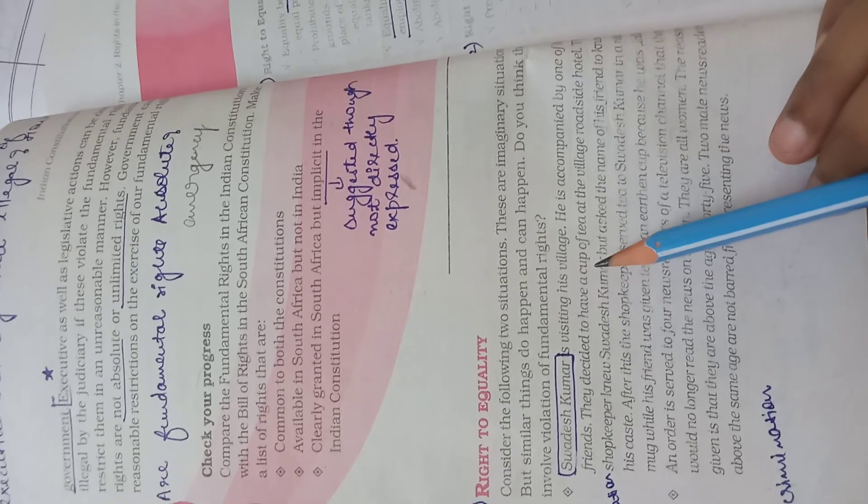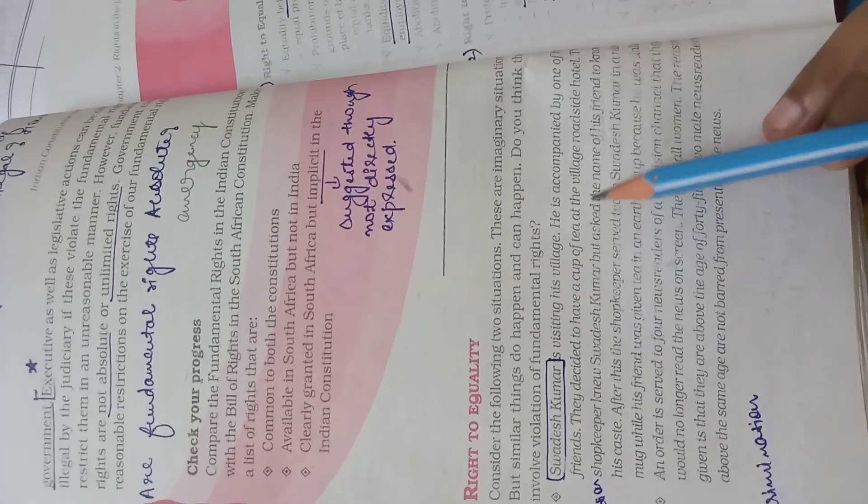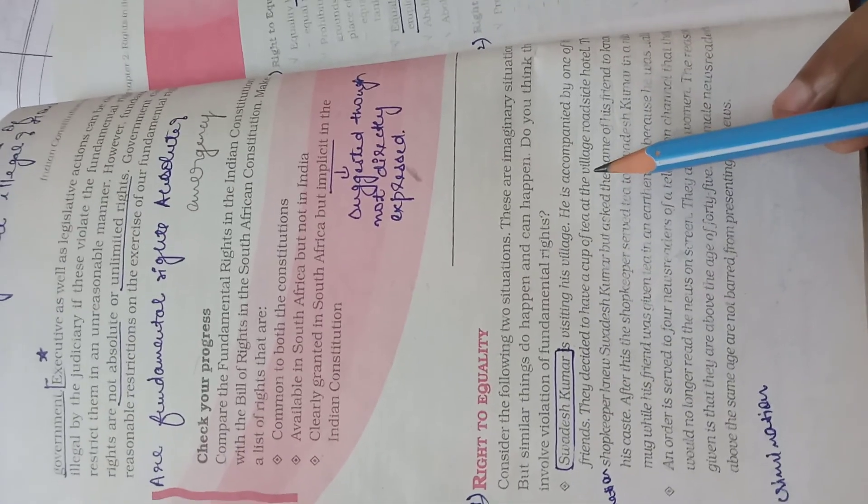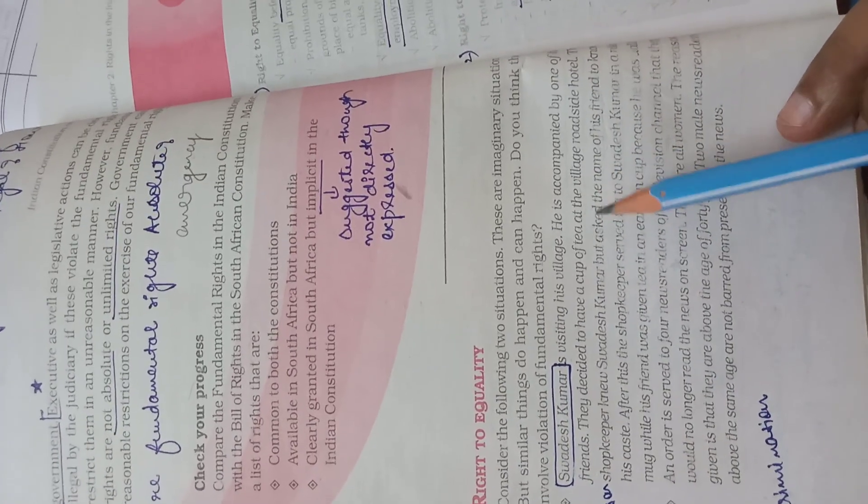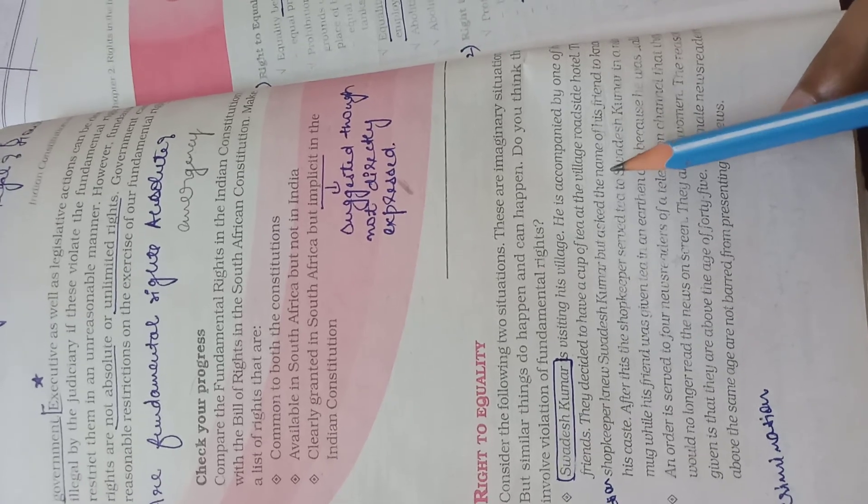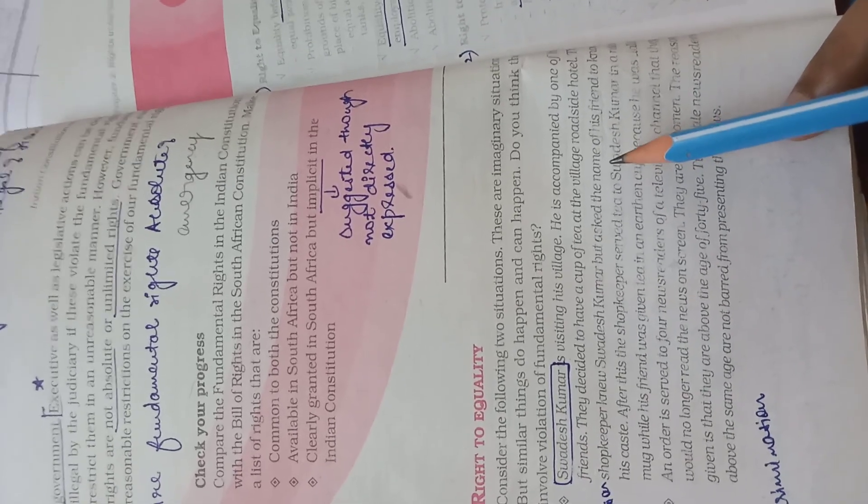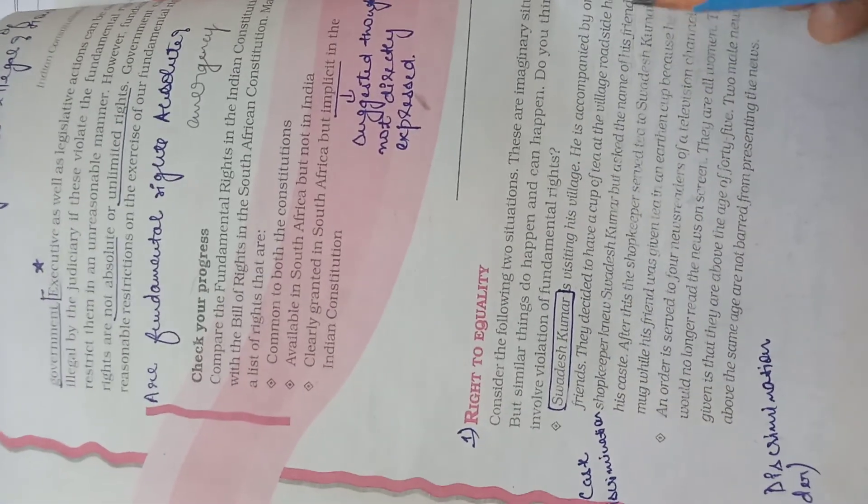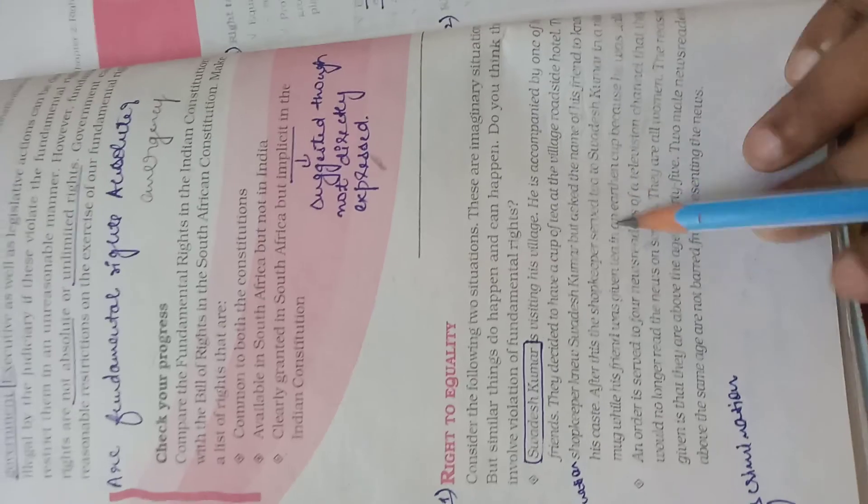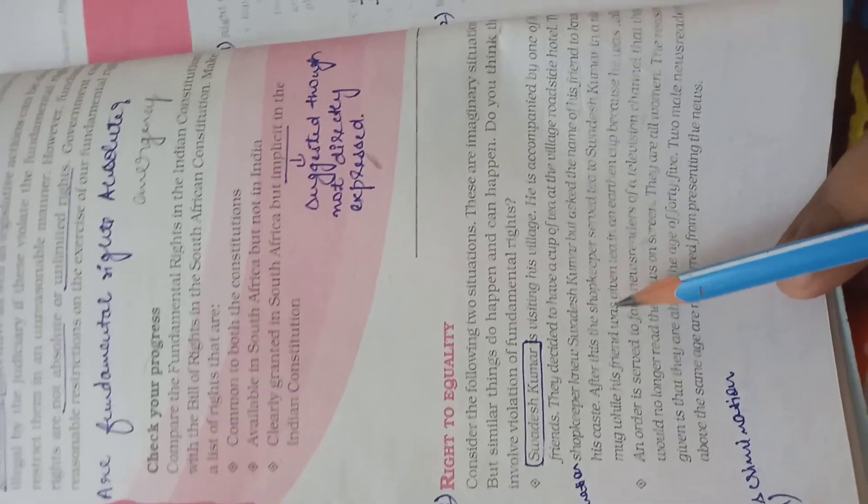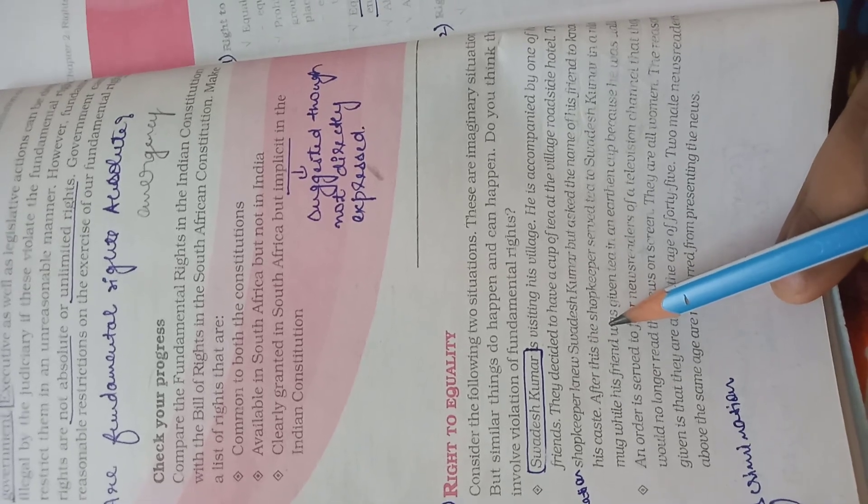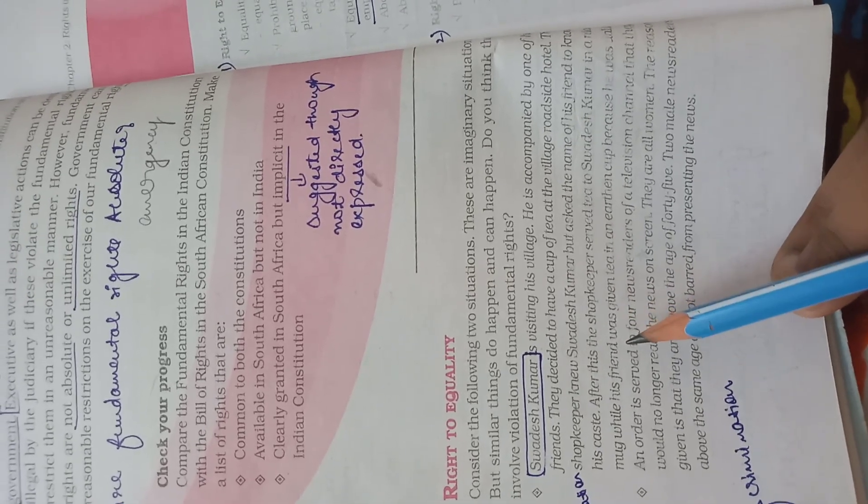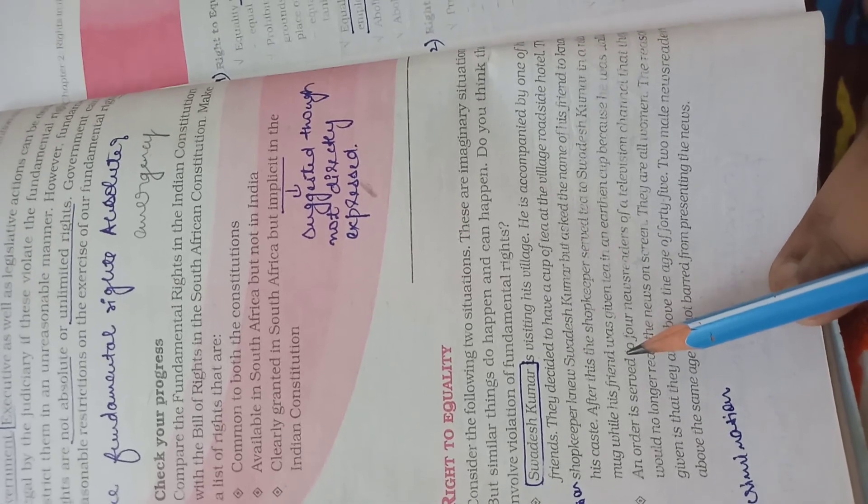Now, Swadesh Kumar is visiting his village along with his friend. Since they want to have a cup of tea, they stand near the roadside hotel. The shopkeeper already knew Swadesh Kumar. In villages, people do know each other quite well. So the shopkeeper knew Swadesh Kumar but he asked his friend's name so that he could know his caste.